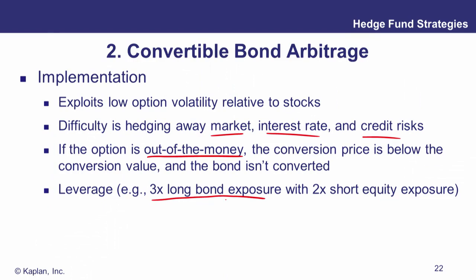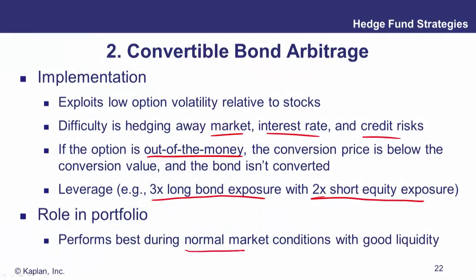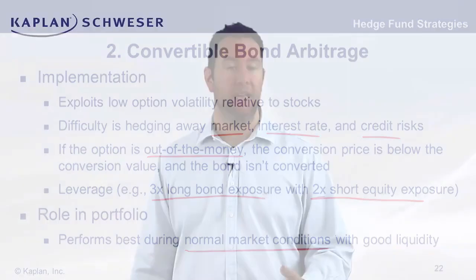The typical implementation is to go long convertible bonds and short the underlying equity in a ratio of 3 to 2 — for example, long 300 million in convertible bonds and short 200 million of the underlying equity. This hedges away the gamma and delta risk in the option while leaving you exposed to the option volatility. This strategy performs well during normal market conditions with good liquidity, but liquidity in convertible bonds can be a significant issue preventing implementation.